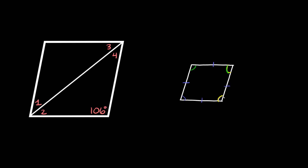So for example if this angle over here was 100 degrees, that means the one next to it would have to be 80 degrees. Same thing with this one, because it's also next to 100, so that one is also 80 degrees. And if you notice, these opposite angles are the exact same — that's always going to be the case with a parallelogram or a rhombus. So if these opposite angles are the same, if this is 100, this one should also be 100.